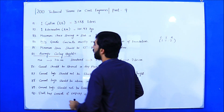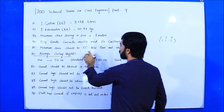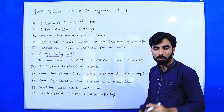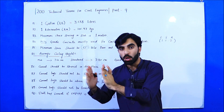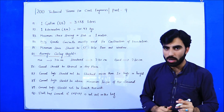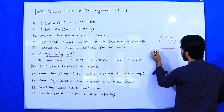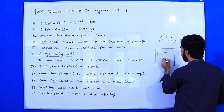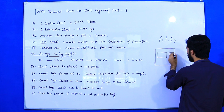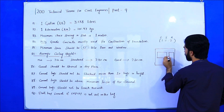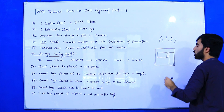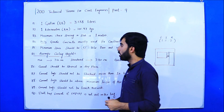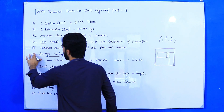Term number 85: Minimum space between door and window should be 12 inches. As you can see, this is the internal elevation of the room — here is the window and here is the door. The space between the door and the window should not be less than 12 inches. This is a very important point to remember.